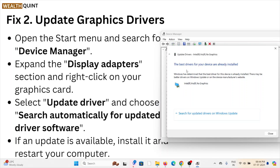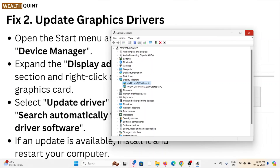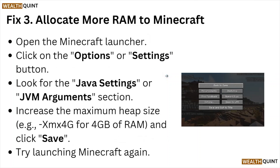Here you can see 'The best drivers for your device are already installed.' This is how you can update your graphic driver. Fix number three is to allocate more RAM to Minecraft. Open the Minecraft launcher and click on the Options or Settings button. Look for the Java settings or JVM arguments section.